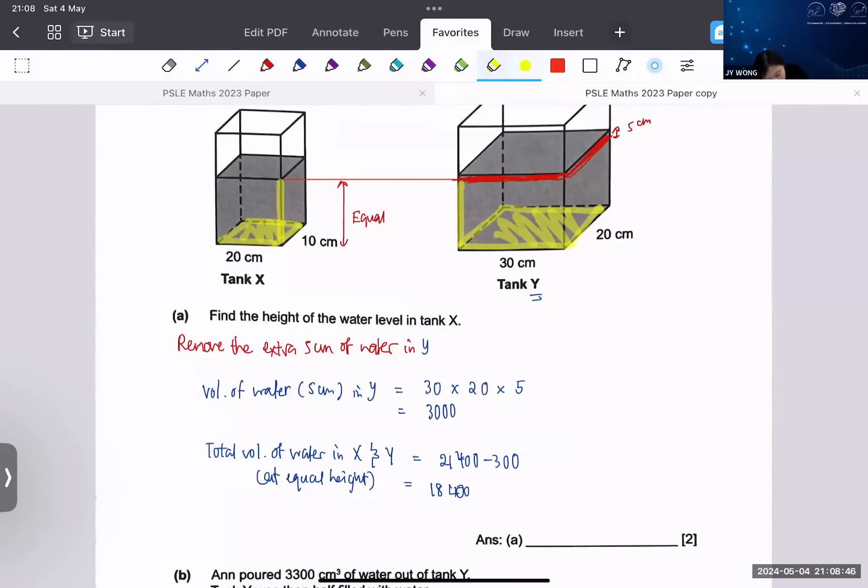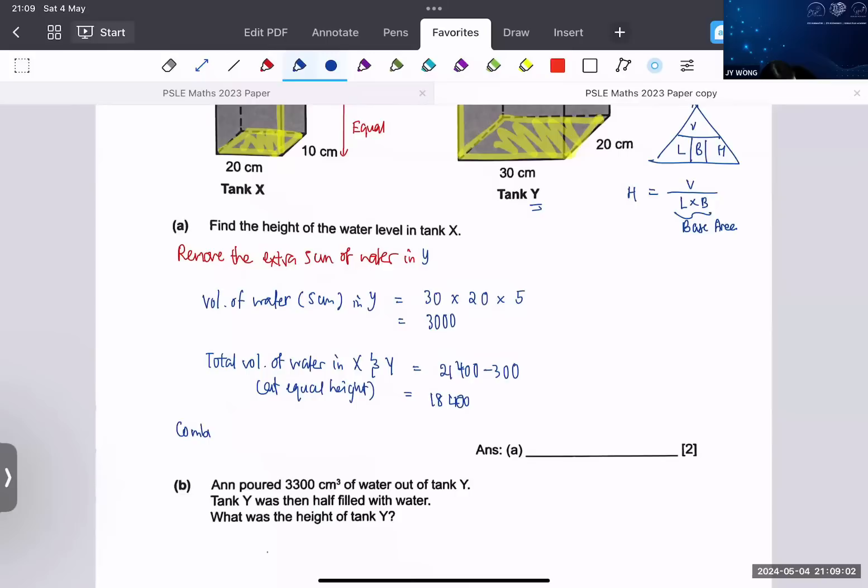At this point we will find out the base area of Y and the base area of X. In your volume formula, length times breadth times height, to find height we take volume divided by length times breadth, which is your base area. The combined base area will be 20 times 10 plus 30 times 20, that will give me 800.